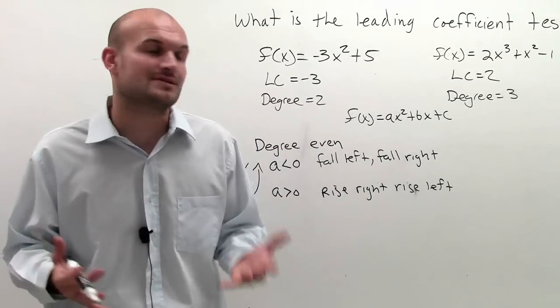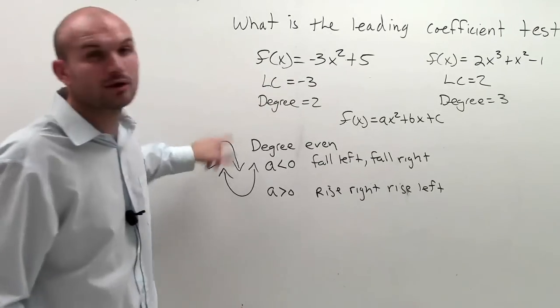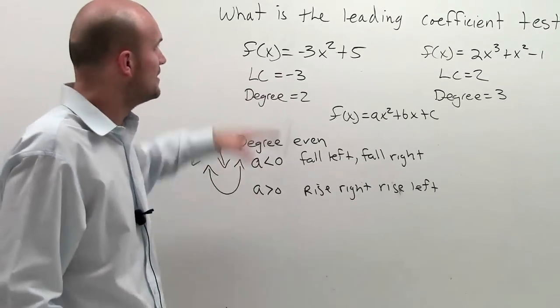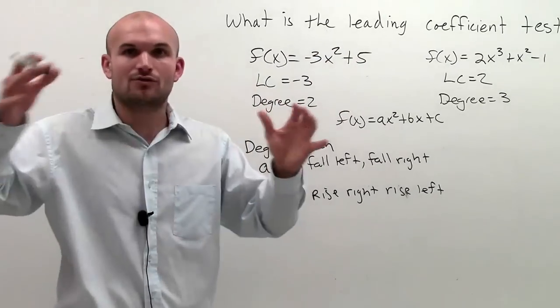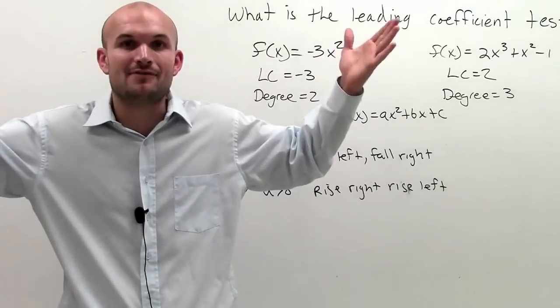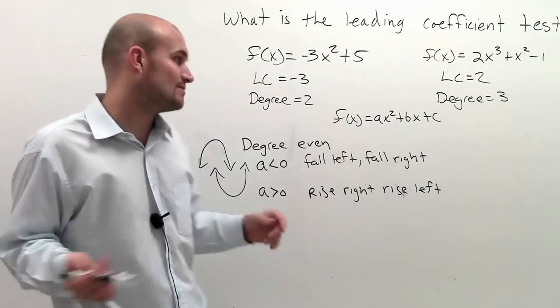And the cool thing about the leading coefficient test, ladies and gentlemen, is it doesn't matter if it's a quadratic. Yeah, we know what quadratics look like. But this could be a 4, it could be an 8, it could be 128. It's going to get crazy in between, but the end behavior is going to either fall left and fall right, or rise left and rise right.